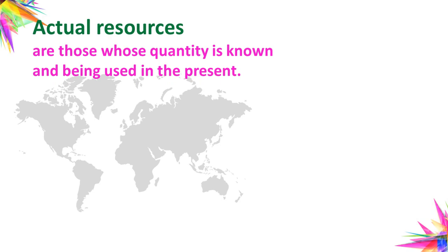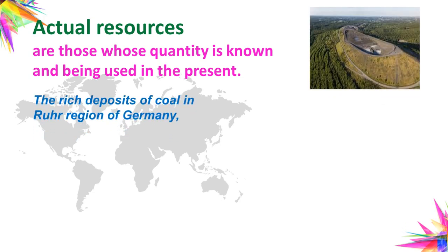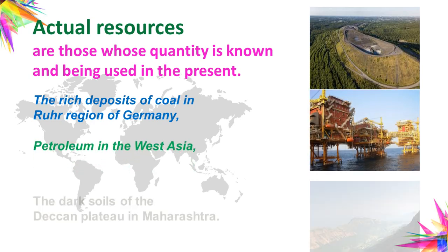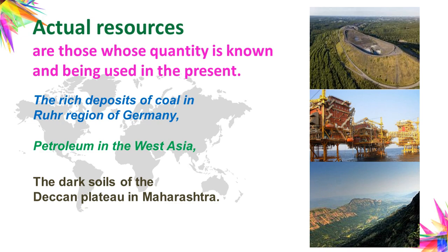Actual resources are those whose quantity is known and which are being used in the present. For example, the rich deposits of coal in the Ruhr region of Germany, petroleum in West Asia, and the dark soils of the Deccan plateau in Maharashtra.